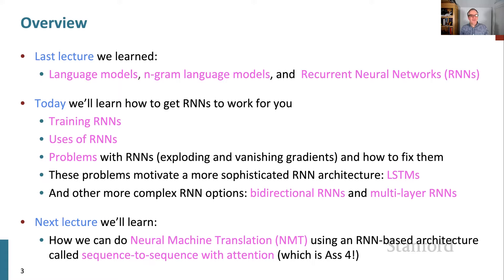These problems will motivate a more sophisticated RNN architecture called LSTMs. We'll talk about other more complex RNN options — bidirectional RNNs and multilayer RNNs. Then next Tuesday, we're essentially going to further exploit and build on the RNN-based architectures to discuss how to build a neural machine translation system with the sequence-to-sequence model with attention. That model is what you'll use in assignment four, and it also means you'll be using all of the stuff we're talking about today.